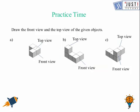So now let us move to a practice time here. And here we need to draw the front view and top view of the given object. So here let us try number 1. So just look at the shape. There are again 3 cubes. So the top view for this one will be, if you are going to look from this, so there are 3 squares, 1, 2, 3.